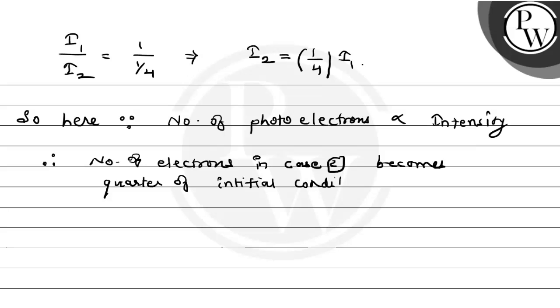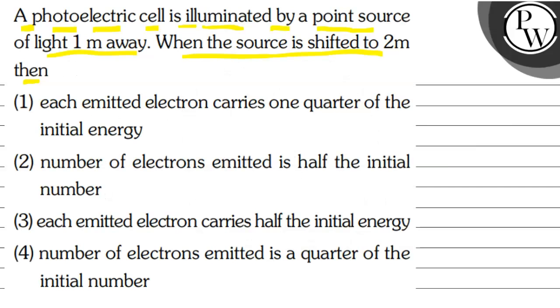To aaye bacho hum dekh lete hain ki hamare paas jo option hai unmein se kaun sa option right option hai. To dekhe bacho yahan pe fourth number ka jo option hai, number of electrons emitted is a quarter of the initial number. Yah hamara right answer hai. So I hope you understood it well, best of luck, thank you.